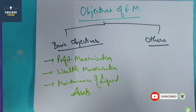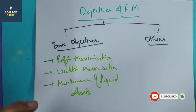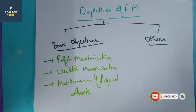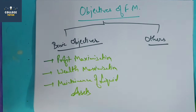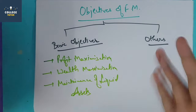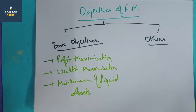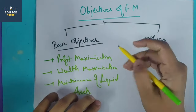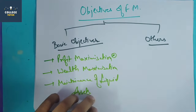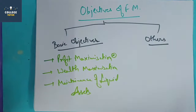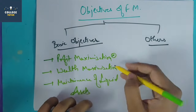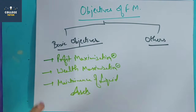Profit maximization: the primary aim of any business, especially in traditional thinking, is to earn profit. If there is no profit, there is no benefit to the business. So the basic objective of financial management is profit maximization — how to increase profit further and further.